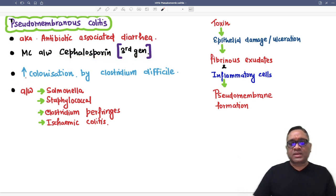What will happen here? There will be increased colonization by Clostridium difficile. So remember, this is the most common organism, but they are also associated with other organisms like Salmonella, Staphylococcal infection, Clostridium perfringens, and Ischemic Colitis.